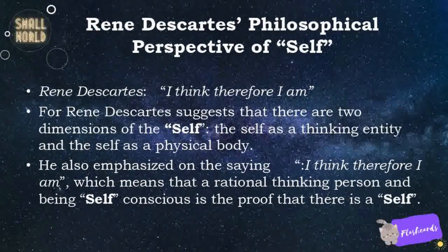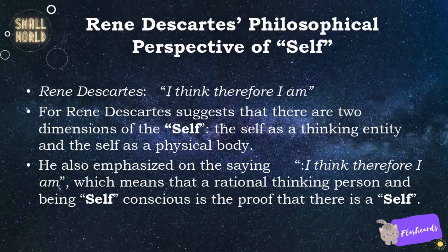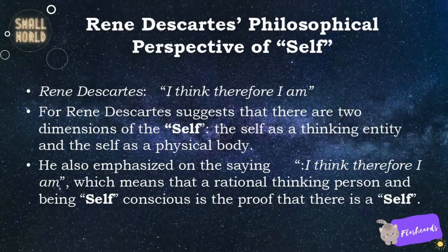René Descartes' Philosophical Perspective of Self. Descartes suggests that there are two dimensions of the self: the self as a thinking entity and the self as a physical body. He also emphasized the saying, 'I think, therefore I am,' which means that a rational thinking person being self-conscious is the proof that there is a self.